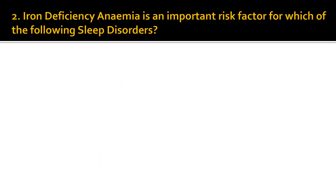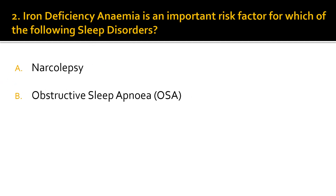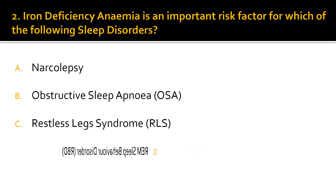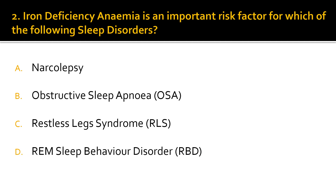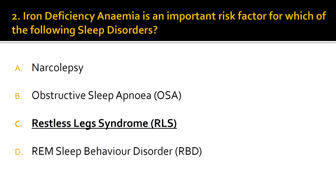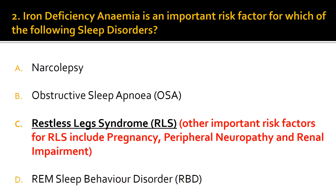Question 2. Iron deficiency anemia is an important risk factor for which of the following sleep disorders? The correct answer is C: Restless Leg Syndrome, or RLS. Other important risk factors for RLS include pregnancy, peripheral neuropathy, and renal impairment.